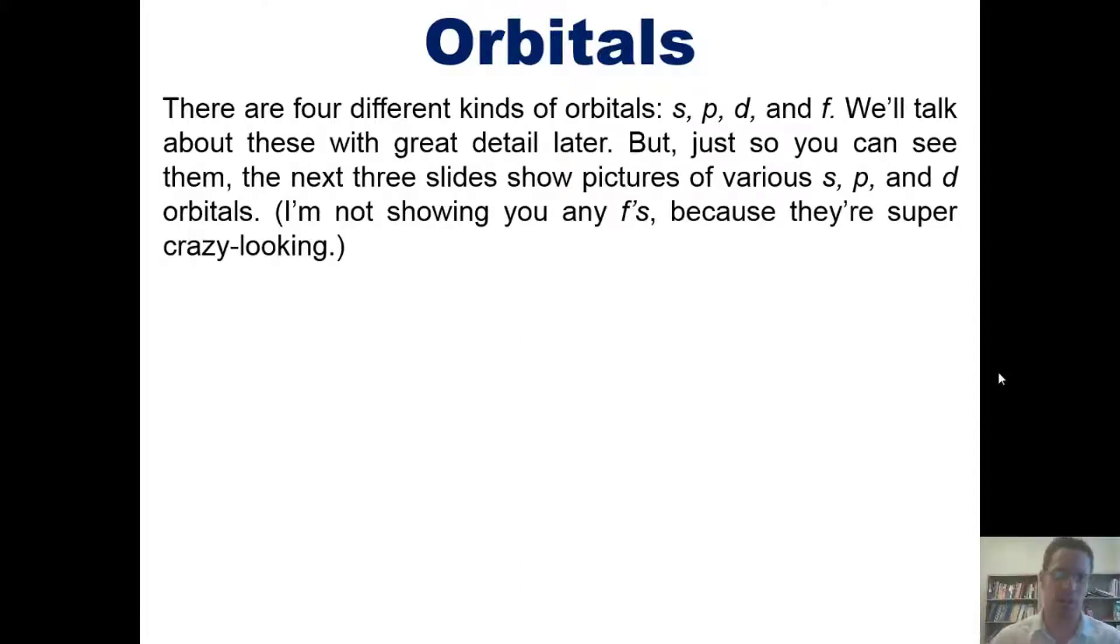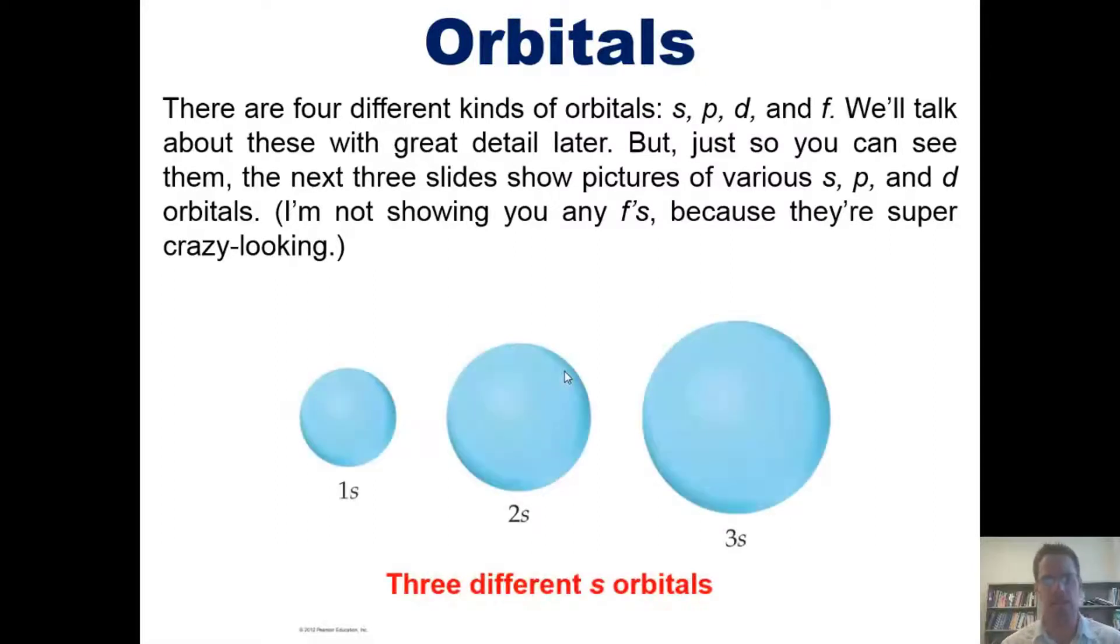I'll begin by showing you s orbitals. As it turns out, if you solve the Schrödinger equation for an s orbital at any energy level—n = 1, 2, 3, 4, etc.—you'll notice that the shapes are like this. All of them have spherical shapes. The only difference from one s orbital to another is that the size gets larger and larger and larger.